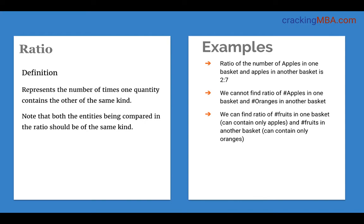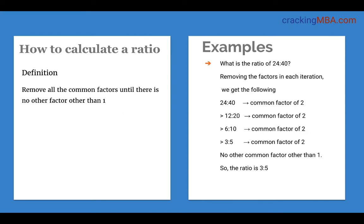However, we can always find the ratio of the number of fruits — the quantity of fruits in one basket and the quantity of fruits in another basket. What those fruits consist of, we don't care, as long as we're comparing the entity called the number of fruits. Now let's move on and see how to calculate a ratio. A ratio is basically calculated by removing all the common factors between the two numbers.